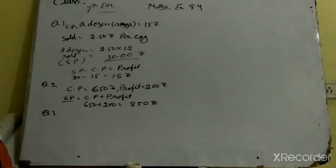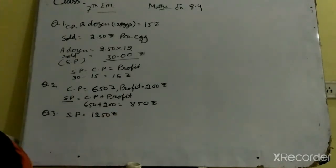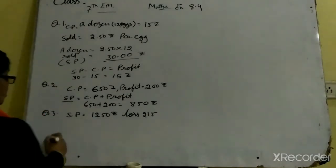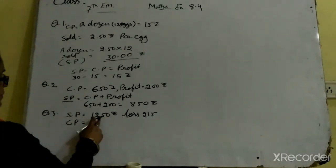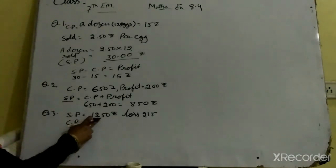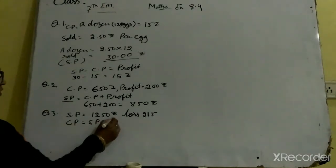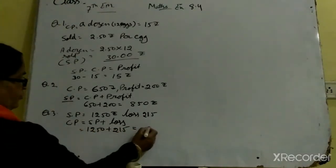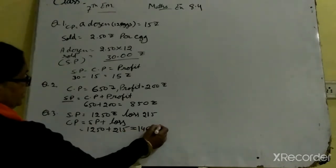Question number 3. The selling price of an article is 1250 — yani SP ho gayi 1250. So what is the cost of an article? Jab loss ho gaya hai, to SP mein loss plus kardo CP nikalte waqt. 1250 plus 250 = 1500 rupees yani CP.